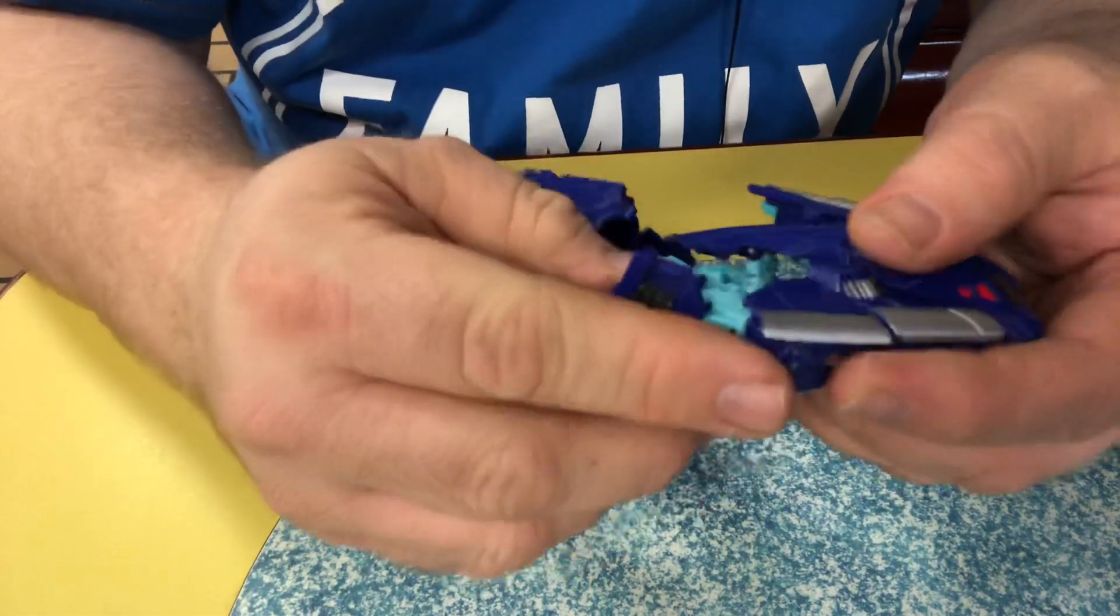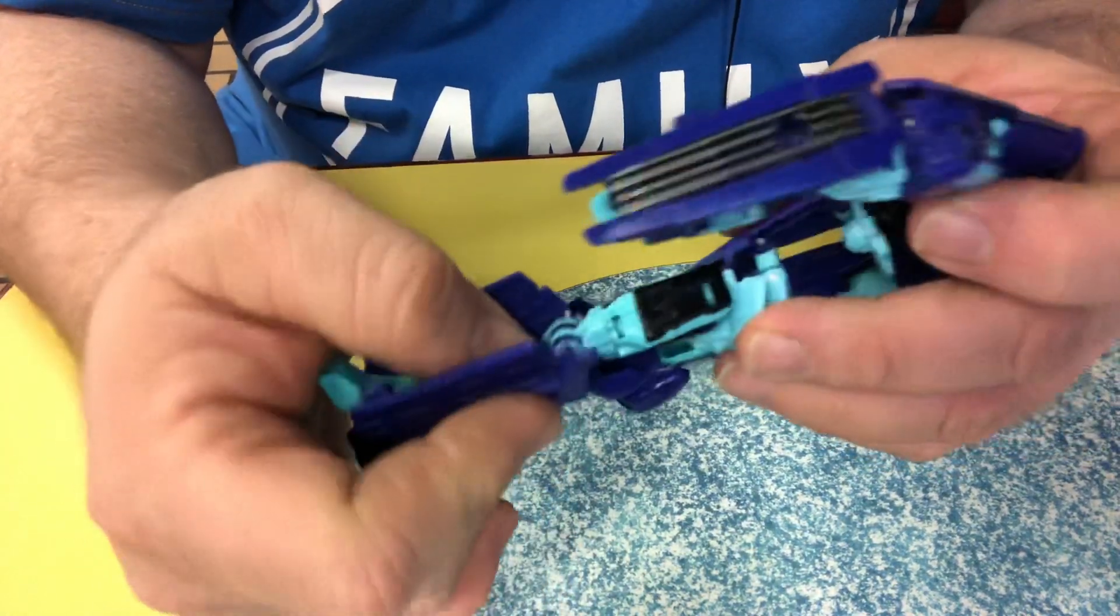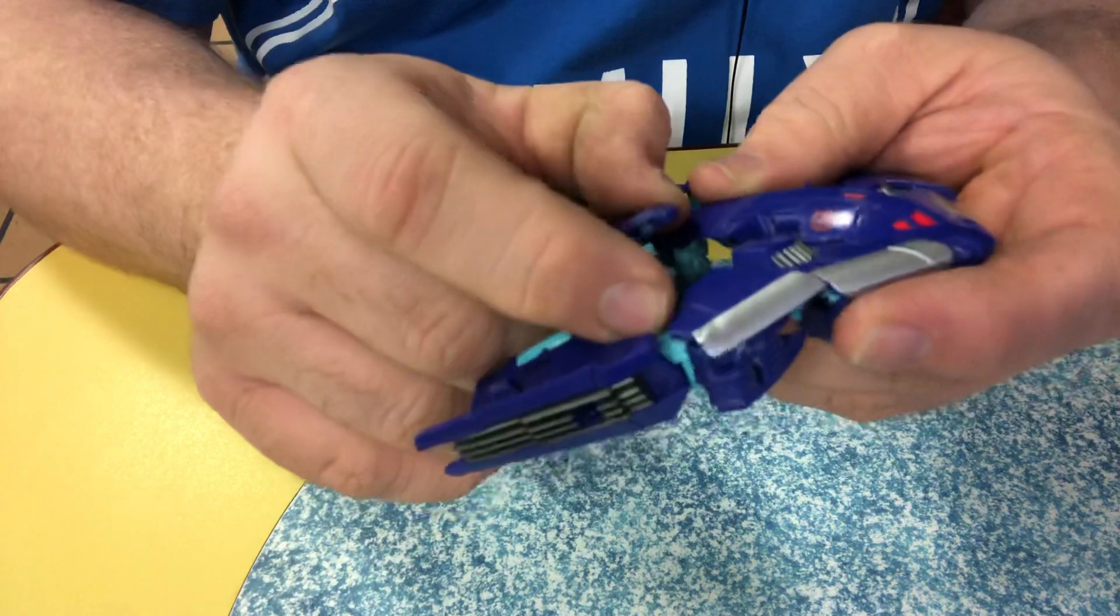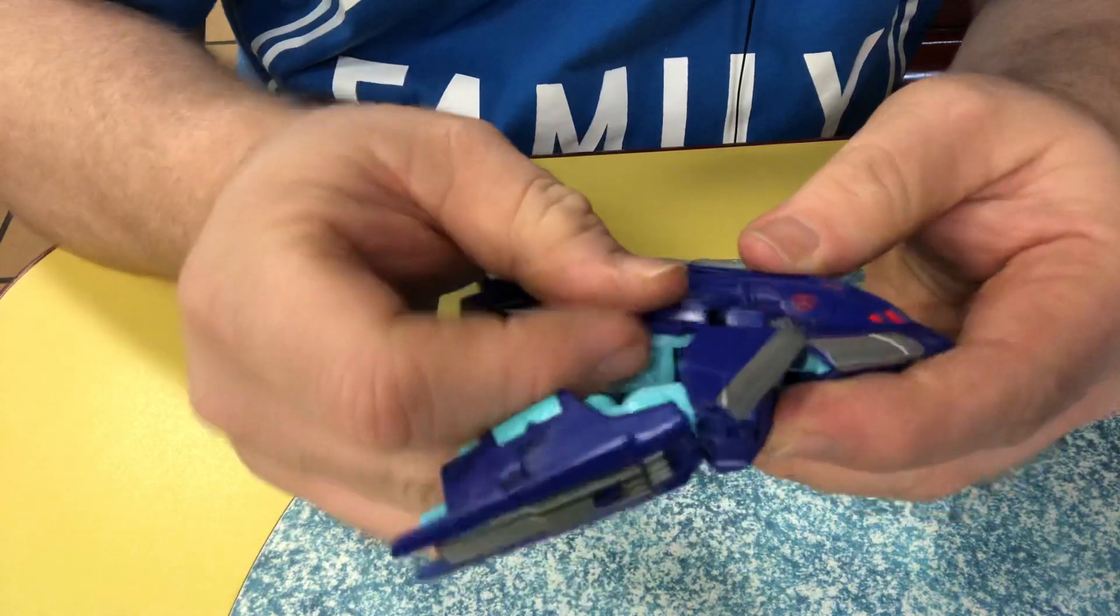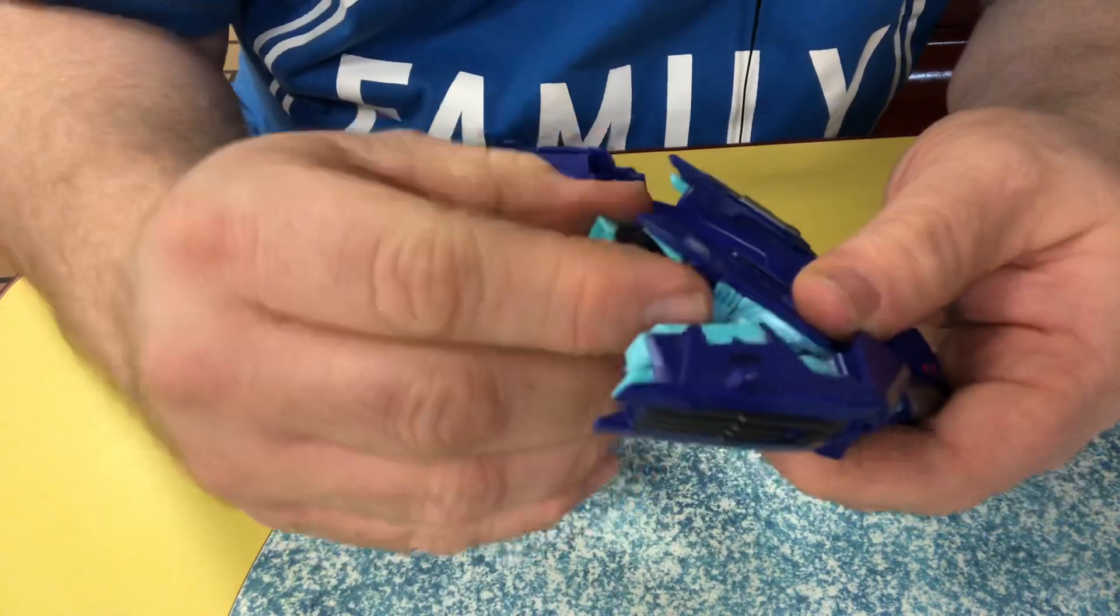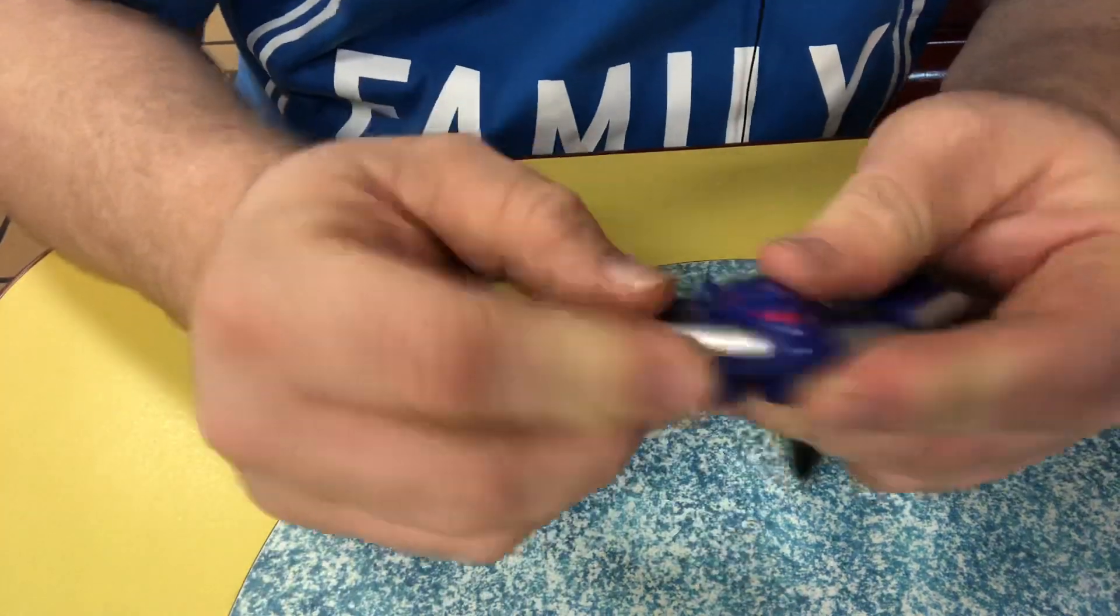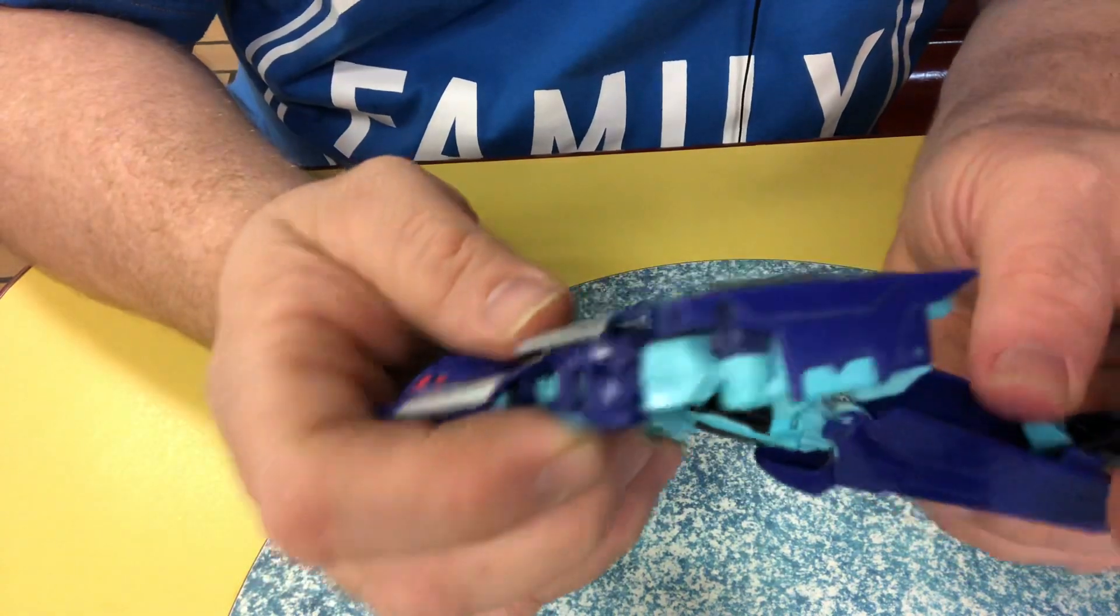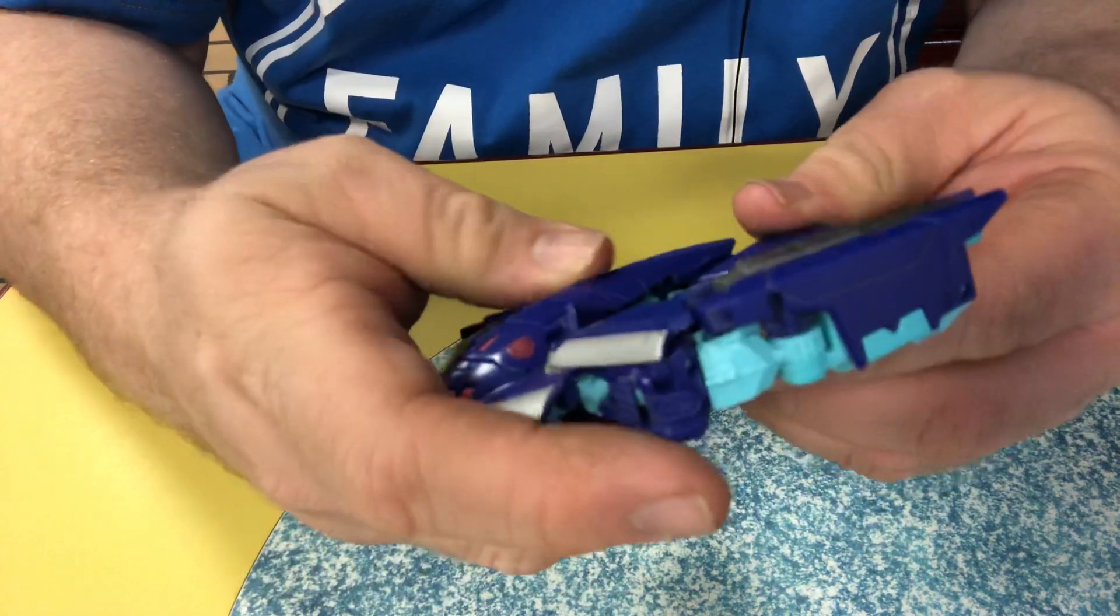Like that, take the leg, bring it forward, bend at the knee, fold that piece in right there, pull the feet in, and it just pegs right into place. Show that again: pull the feet, rotate, put it in there right there.